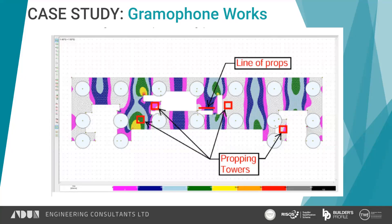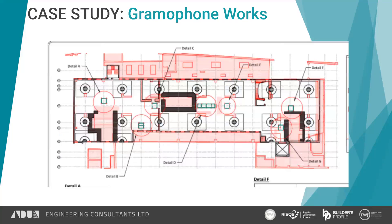We have to look at the structure in a holistic way: know where the loads are and how they're transferred, and where we need to put props to ensure none of these slabs will fall down. In the end, props were placed over three different levels - not back-propping, because these holes were on every level being cores. It was an accumulative load down these props, and they had to be arranged in exactly the same position all the way through the structure. The three levels of propping had to be in a straight line, otherwise the load would go back through the slab and might not be supported properly.